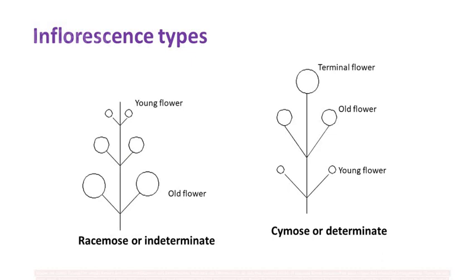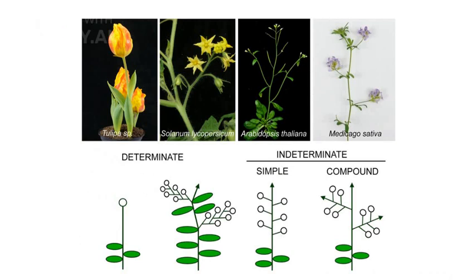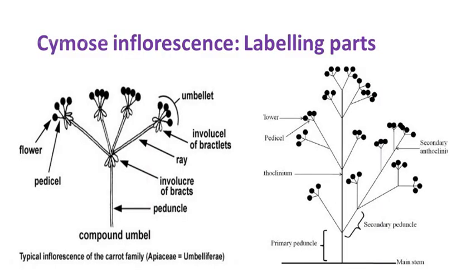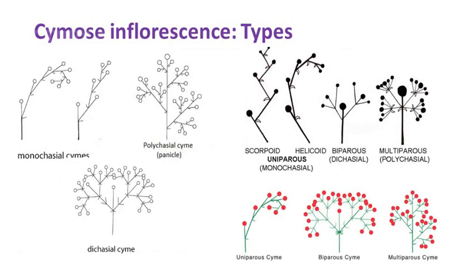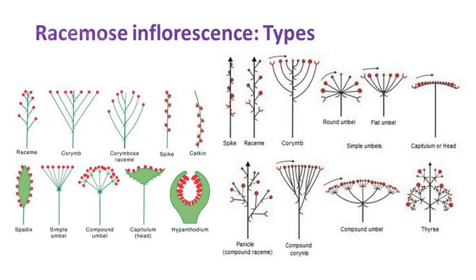Now let's see inflorescence — an axis that contains a bunch of separate florets with unique and interesting arrangements. There are two main types. Racemose or indeterminate axis, where the main axis continues to grow indefinitely and does not terminate with a flower. Cymose or determinate axis, where the main axis stops growing and the oldest floret is found at the end of the axis and opens before others. These can also be found as simple or compound based on the number of axes. Depending on the arrangement of these axes, different names are given for racemose and cymose types.